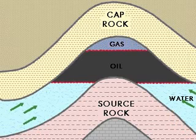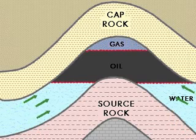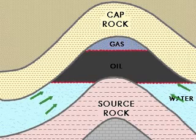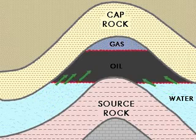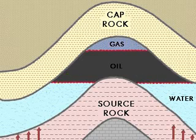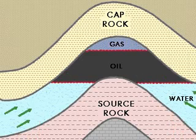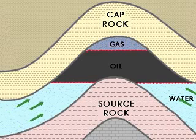As more and more sediments get deposited, the underlying sediments get compacted and oil from the source rock is expelled. This oil then starts moving vertically upwards. This process is known as primary migration.